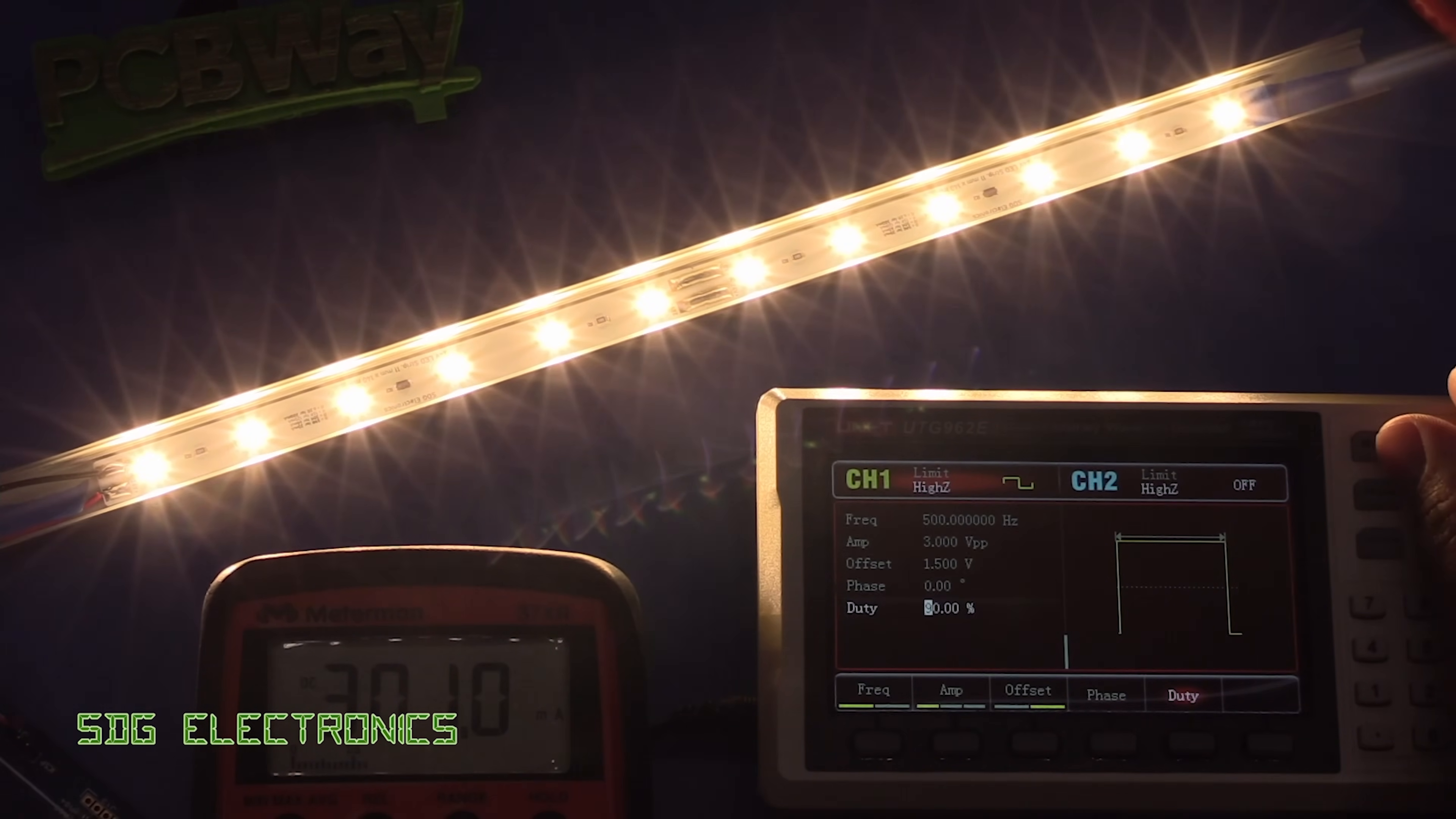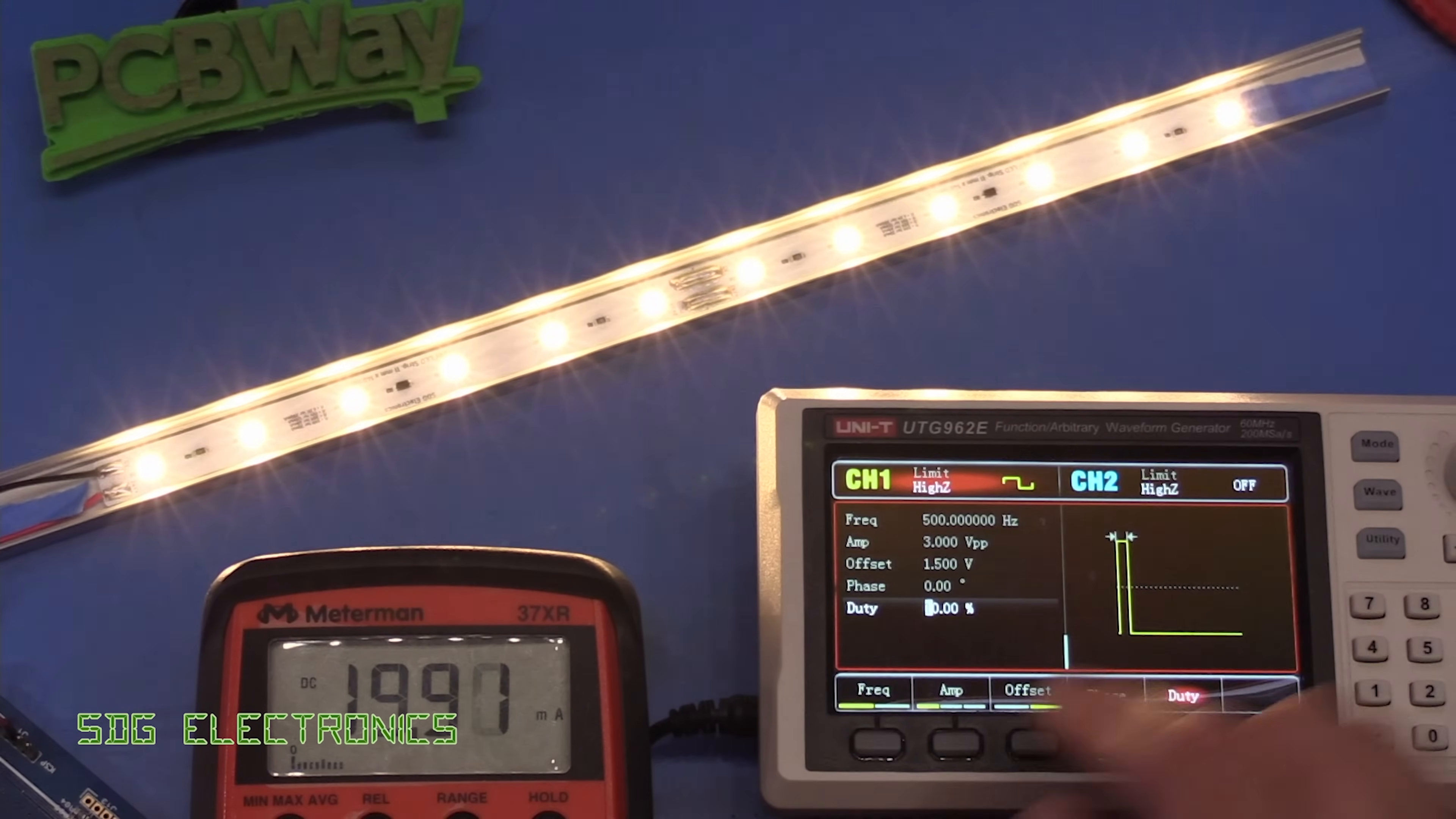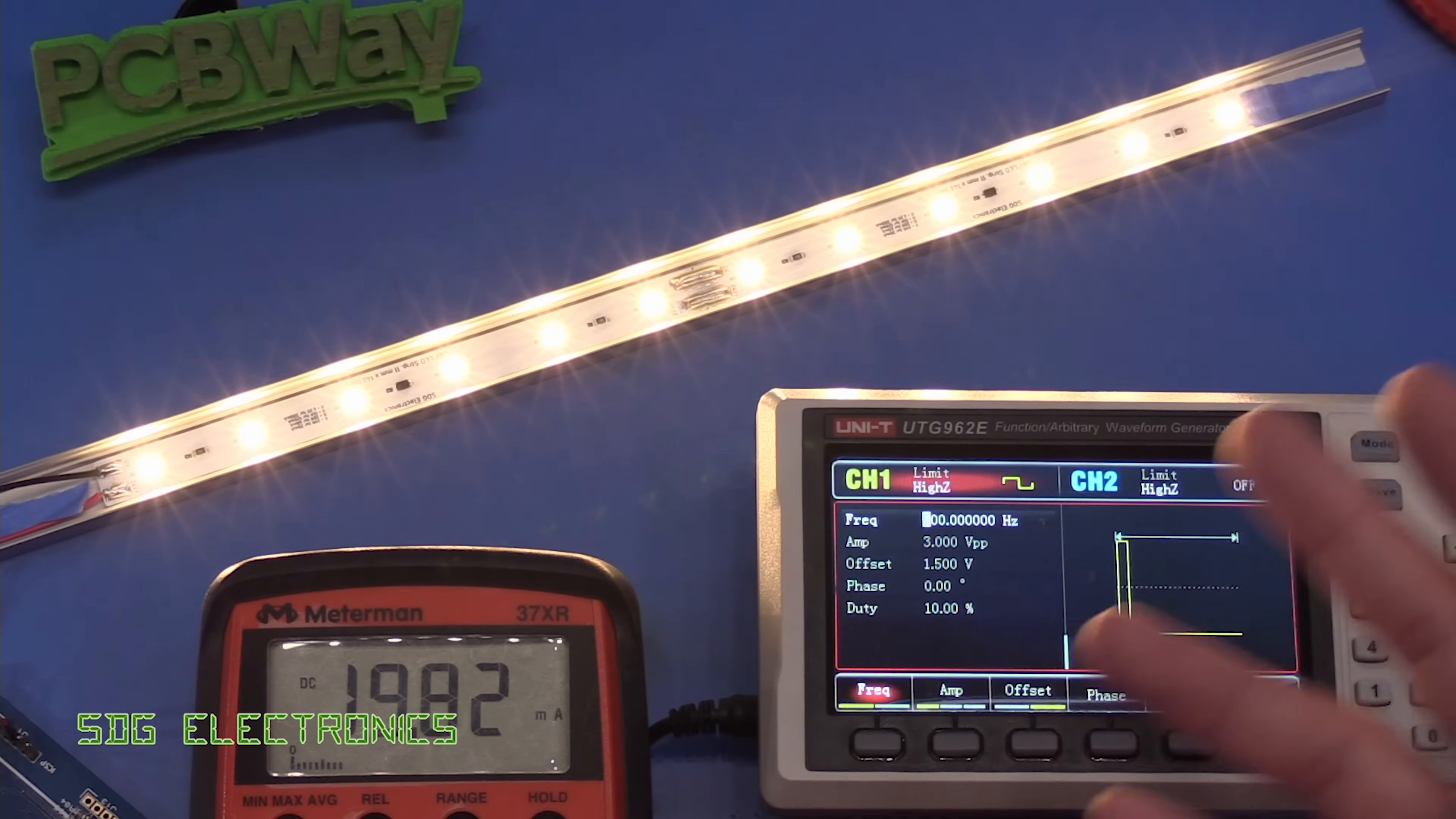so just again slightly lower than where we should be but it still works absolutely fine. 90 percent 261 milliamps and then 100 percent is 301 so we've got full control of the LEDs basically it's just non-linear dimming which is still absolutely fine